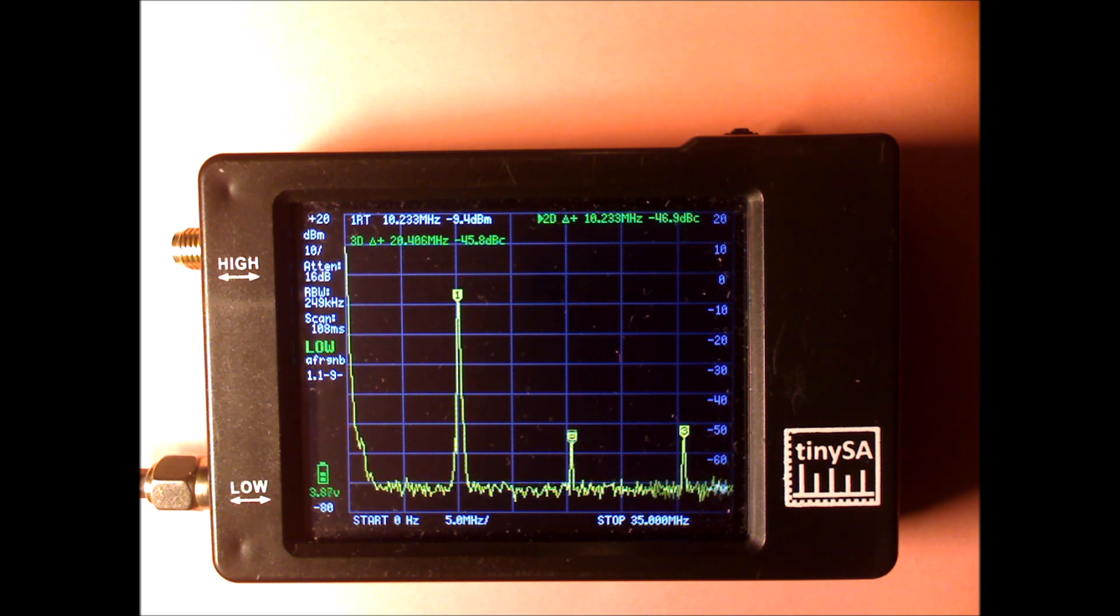This is minus 10 dBm. Look at the second harmonic and the third harmonic. The third harmonic at minus 45 dBc and I'm going to take one last step. This is 0 dBm, but you see the levels of the harmonic stay at the same level.